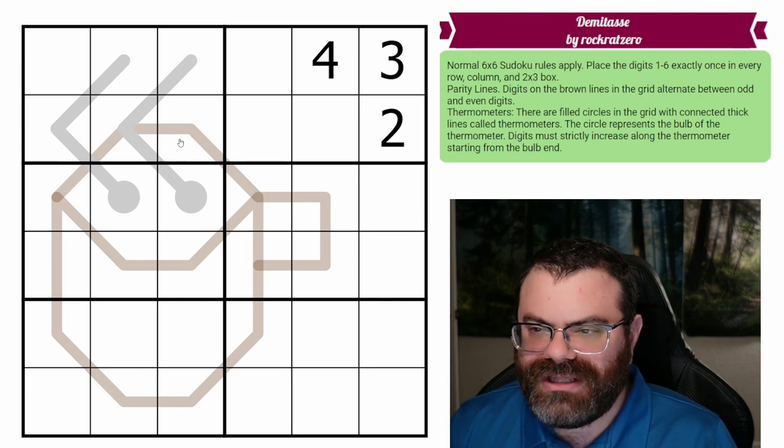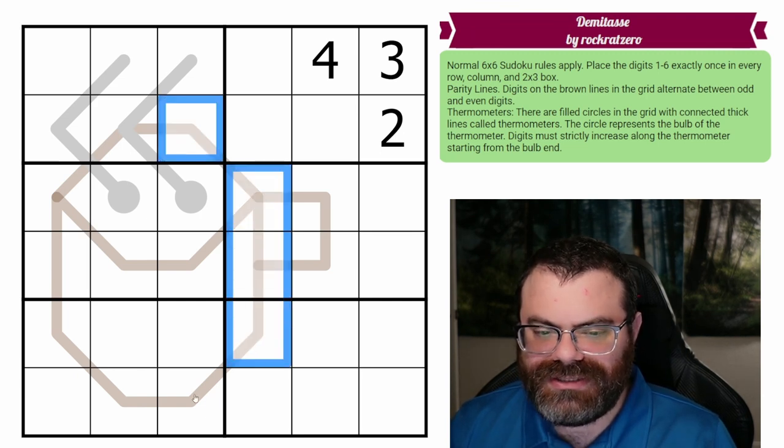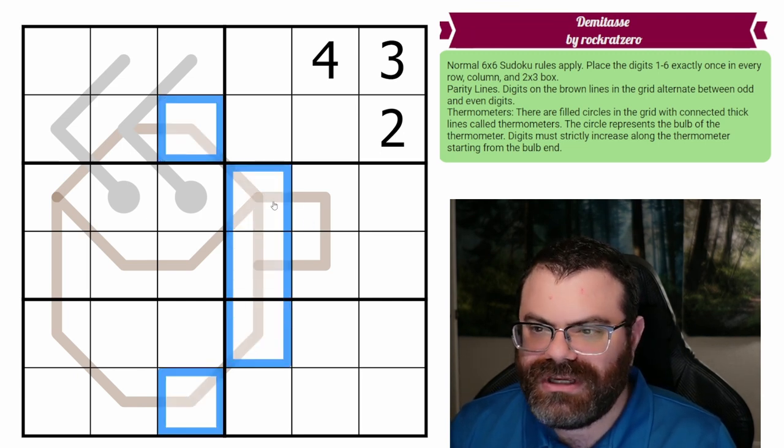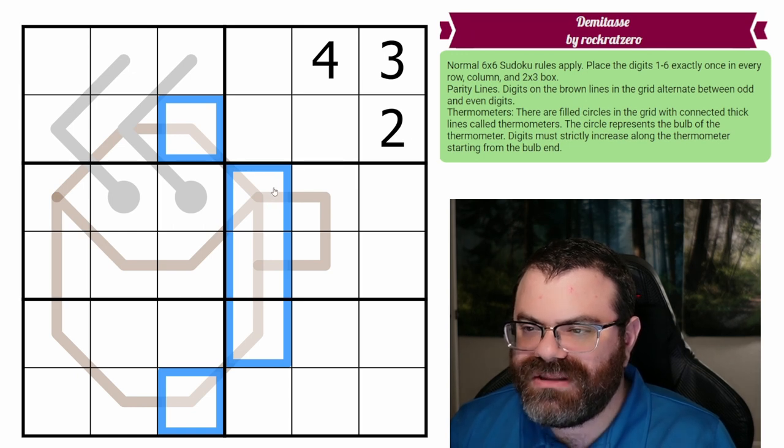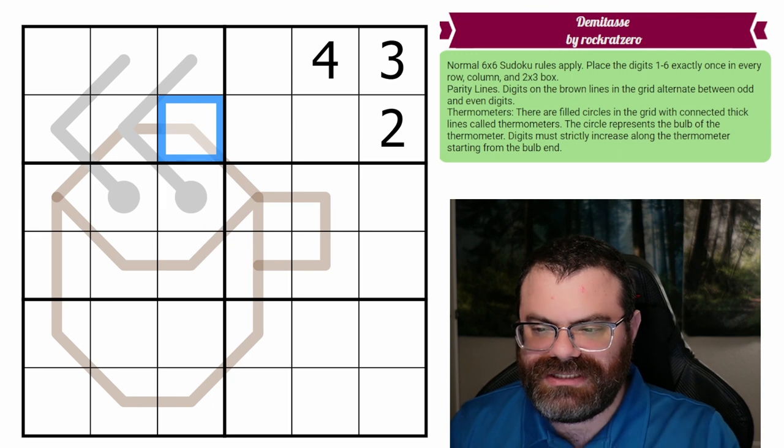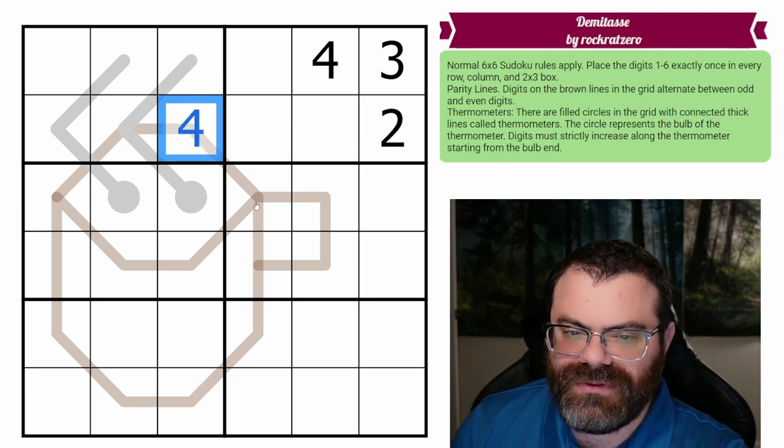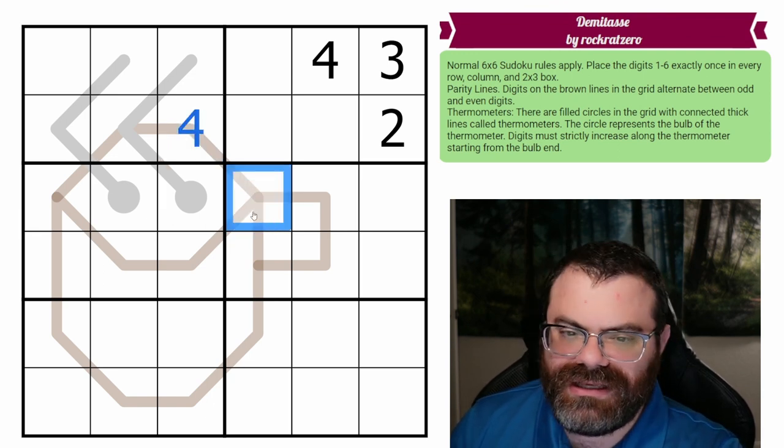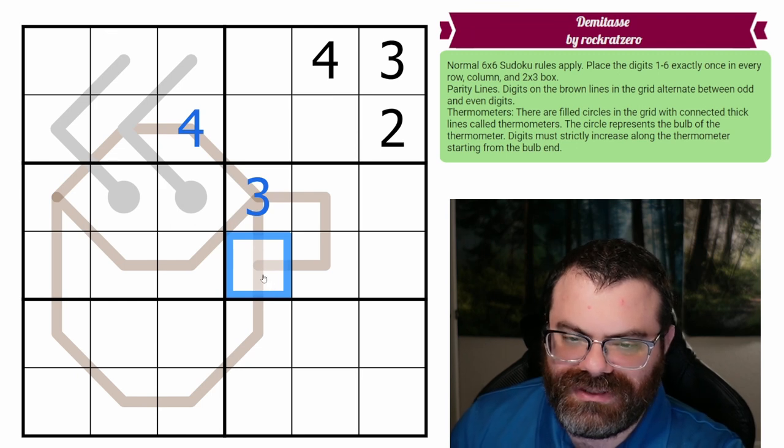We also have parity lines in the grid, these transparent brown lines. Digits on the brown lines alternate between odd and even. So if this digit was even, say a 4, this digit must be odd, say a 3, and then this digit must be even, say a 2.